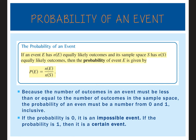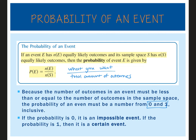The probability of an event occurring is the number of favorable outcomes over the total number of outcomes in the sample space. Because the number of outcomes in an event must be less than or equal to the number in the sample space, the probability must be a number between 0 and 1. This can be written as a fraction, decimal, or percent — but always between 0 and 1.